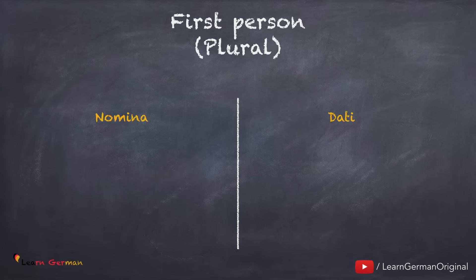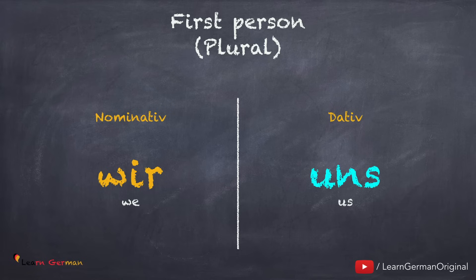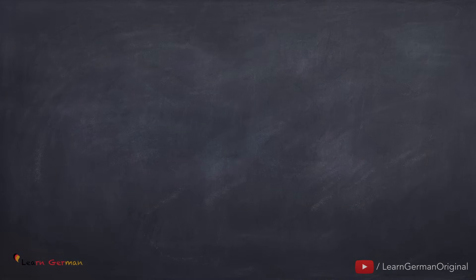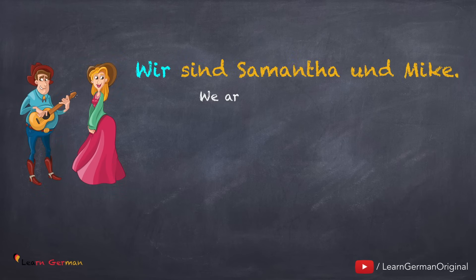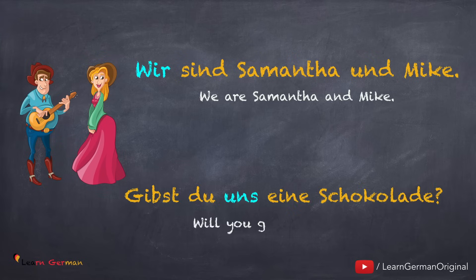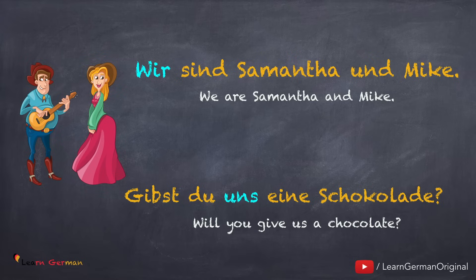Let's do the plural pronouns now. First person plural: in Nominativ it is wir, and in dative it's uns. Let's see how to use them: 'Wir sind Samantha und Mike. Gibst du uns eine Schokolade?' In this question, du is the Nominativ subject, eine Schokolade is the accusative object, and the dative object is uns. The dative personal pronoun for wir is uns.